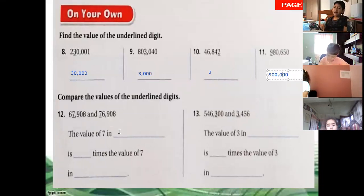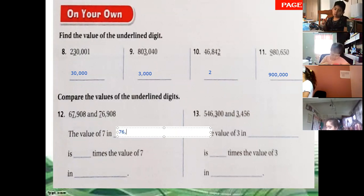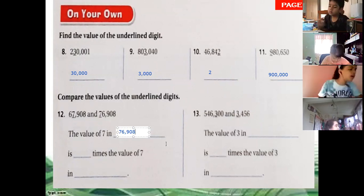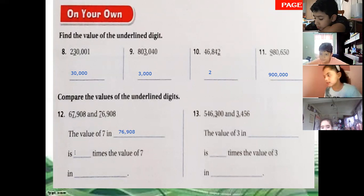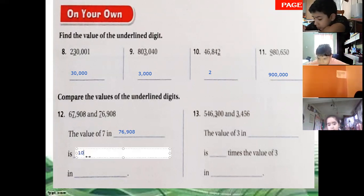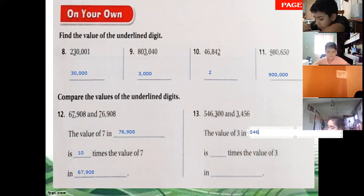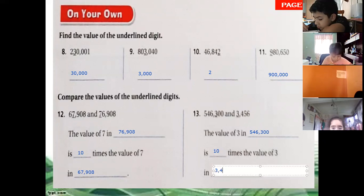Compare the values of the underlined digits. We write the greatest amount first — seventy-six thousand nine hundred eight is greater than sixty-seven thousand nine hundred eight. The value of seven in seventy-six thousand nine hundred eight is ten times the value of seven in sixty-seven thousand nine hundred eight. The value of three in five hundred forty-six thousand three hundred is ten times the value of three in three thousand four hundred fifty-six.